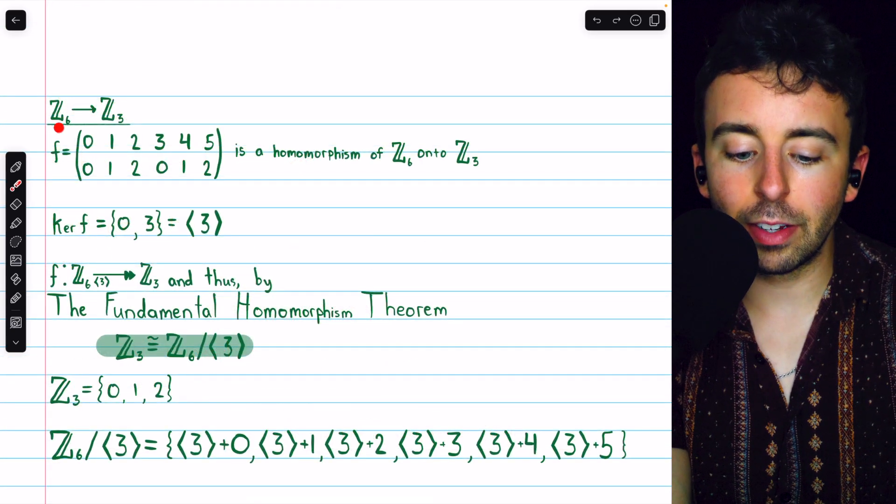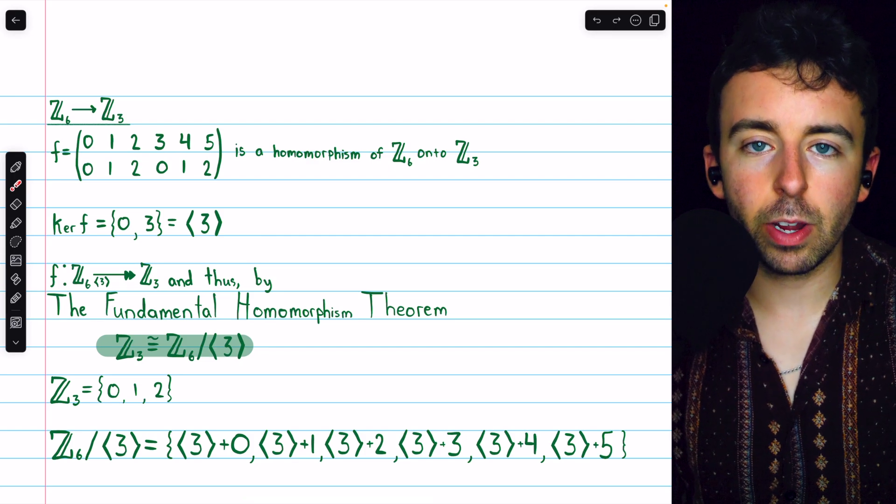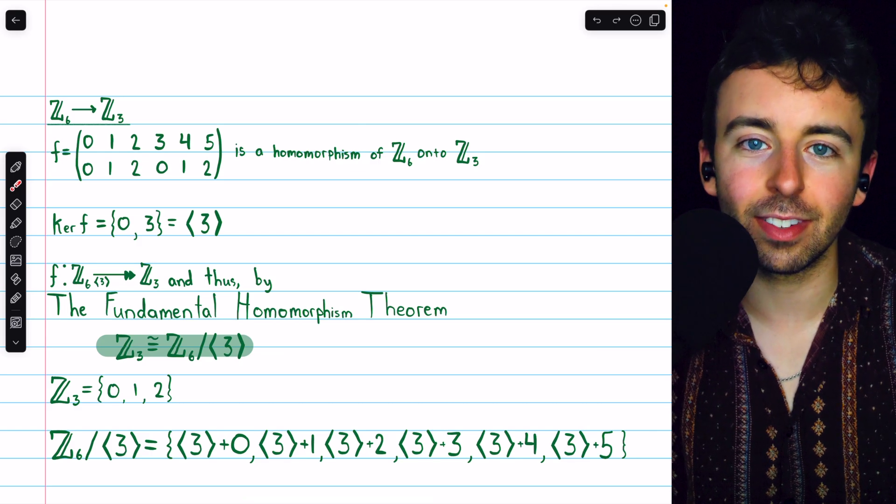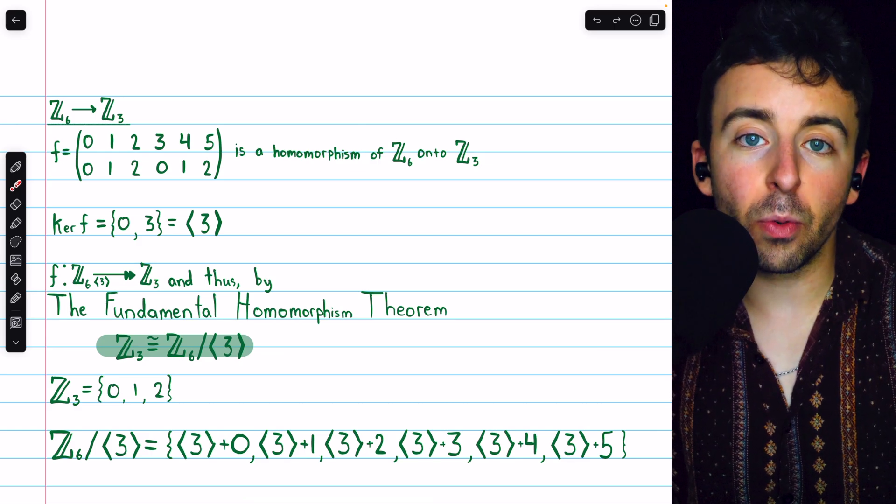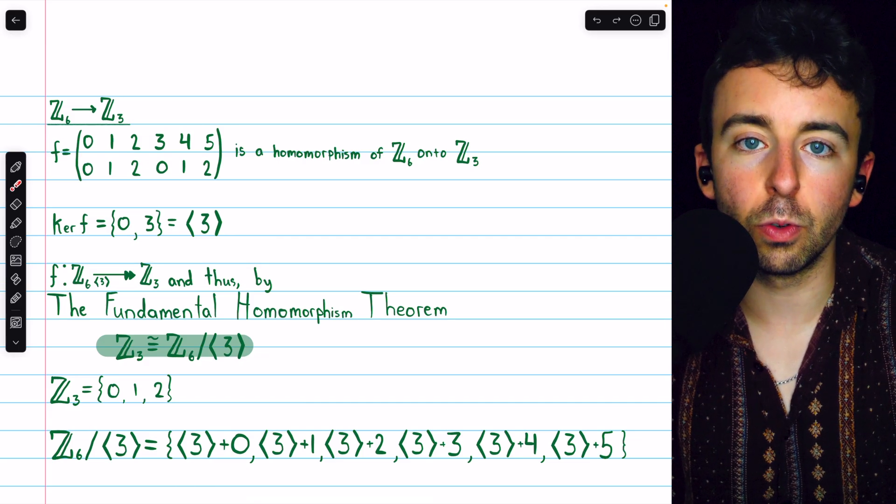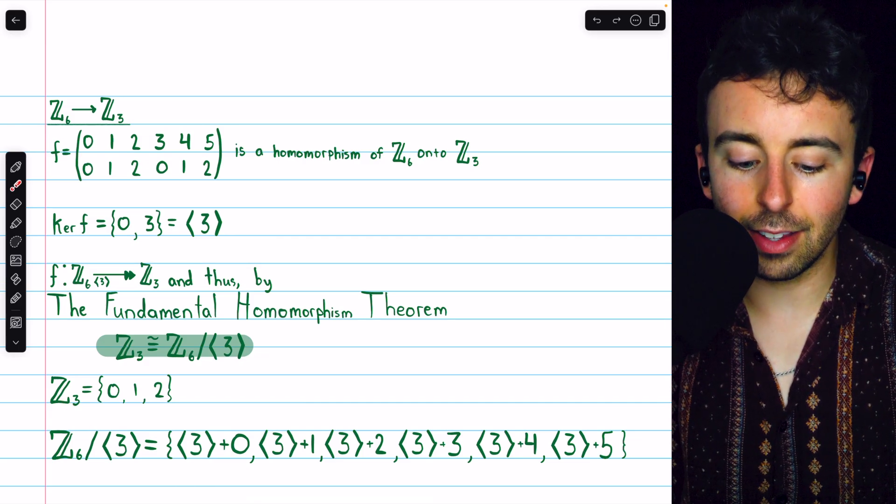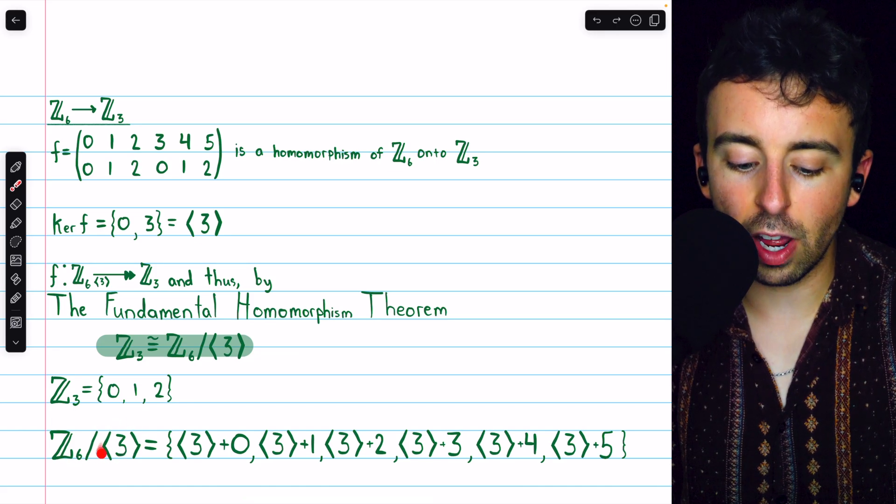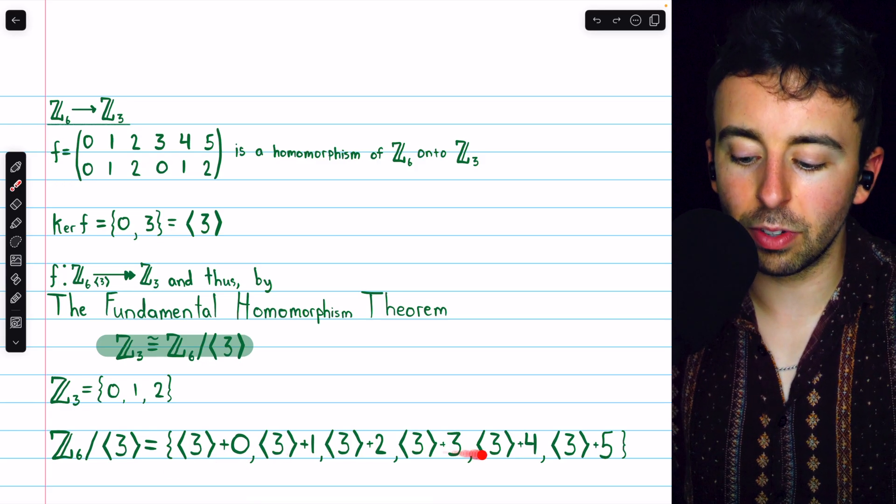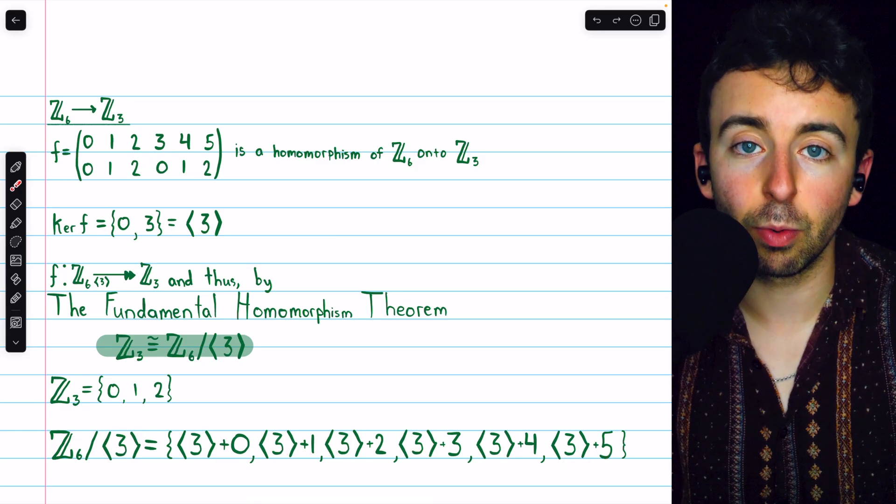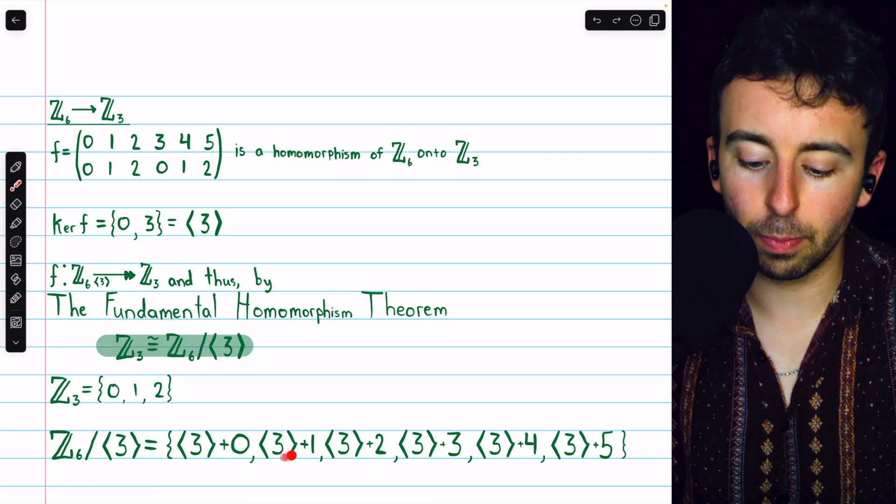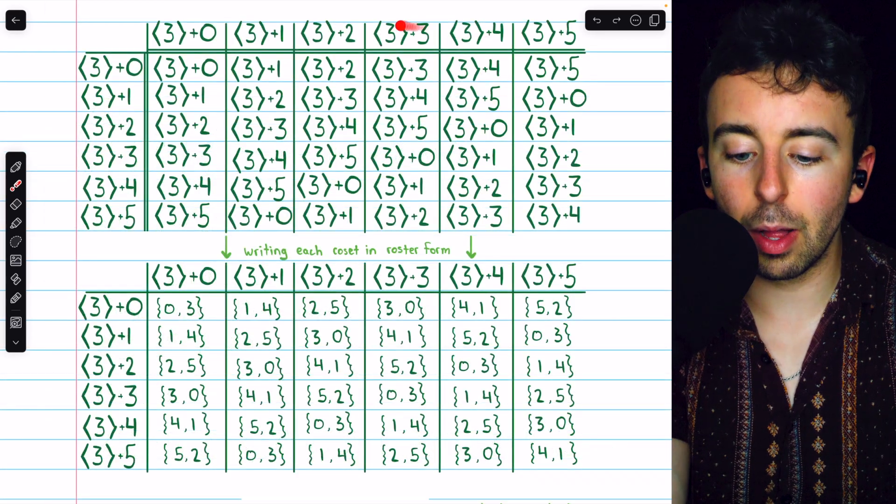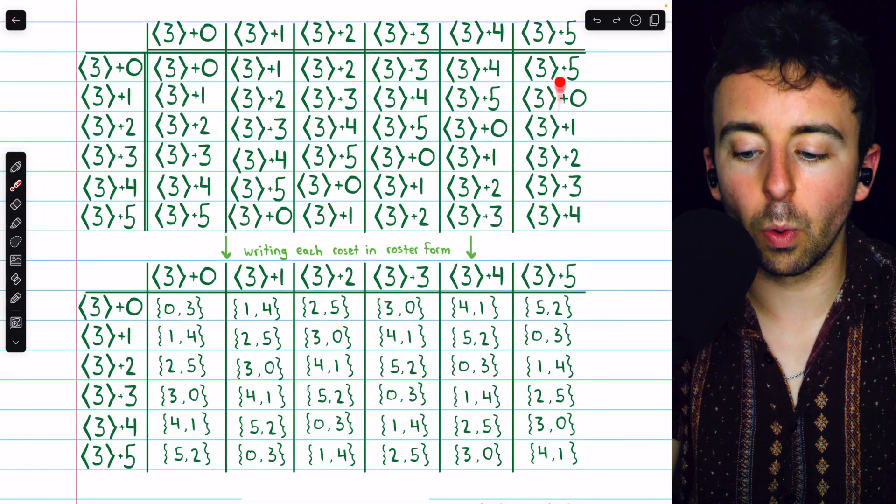All right. Let's come back to that first straightforward example with Z6 and Z3 and look at the group tables so we can really see that isomorphism in action, really see that they have the same structure. It's important that we identify the elements of these groups in order to construct the group table. Z3, of course, contains 0, 1, and 2. And the quotient group of Z6 by the cyclic group generated by 3 contains all of the cosets of the cyclic subgroup generated by 3. So the plus 0, the plus 1, plus 2, plus 3, plus 4, and plus 5. All of those cosets.